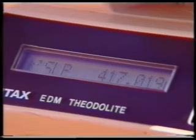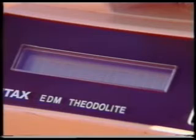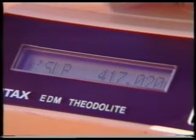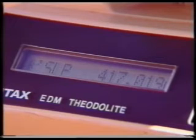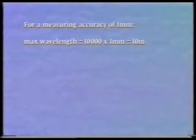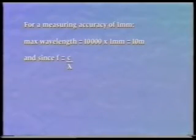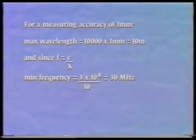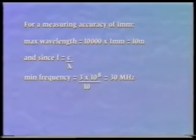When designing an EDM unit, the manufacturer must decide what wavelength to use in the instrument. This will depend on the accuracy required. Modern phase detectors are capable of resolving to one ten-thousandth of a wavelength. So if a measuring accuracy of one millimeter is required, the wavelength should be no longer than 10,000 times one millimeter, which gives 10 meters. And since the frequency of a wave is given by its speed divided by its wavelength, approximating the speed of light to 3 times 10 to the 8 meters per second gives a minimum required frequency of 3 times 10 to the 8 divided by 10, which equals 30 million Hertz or 30 megahertz.